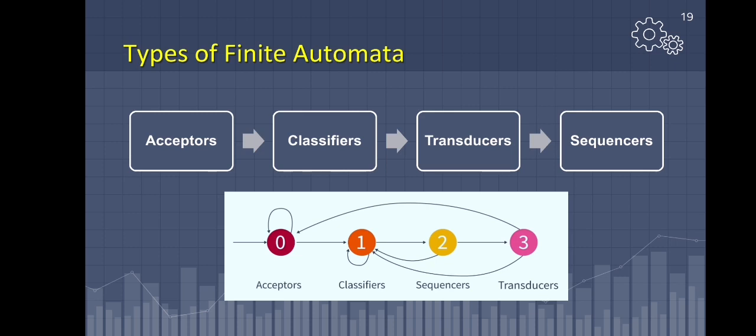Next we have transducers. Transducers use actions to generate output based on a given input or state. They are commonly used in control applications and computational linguistics. Lastly, we have sequencers. Sequencers are also referred to as generators. They are a type of acceptor or transducer with a single letter input alphabet. They only produce a single sequence, which can be acceptor or transducer output sequence.